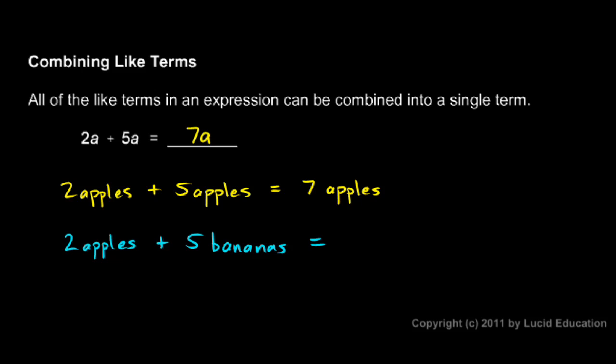Mathematically, that would correspond to this. Instead of 2 apples, think 2a. And instead of 5 bananas, think 5b. 2a plus 5b, those two things can't be combined directly because they are not like terms. They're different types of things. In order for terms to be combined, they have to have exactly the same variable part.